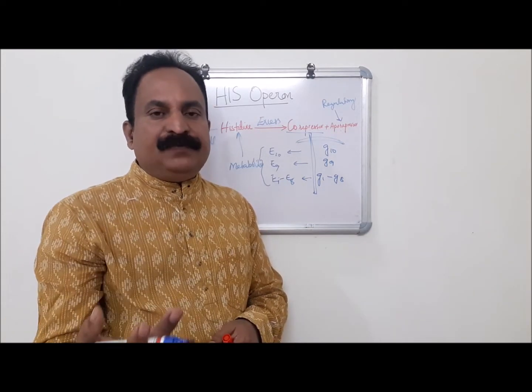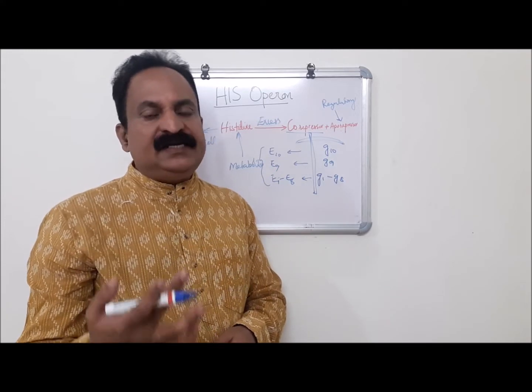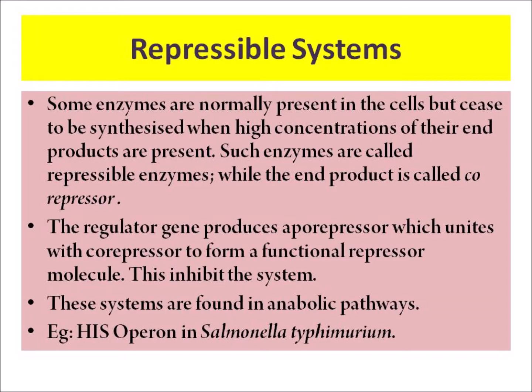In repressible systems, some enzymes are normally present in the cells but cease to be synthesized when high concentrations of their end products are present. Such enzymes are called repressible enzymes, while the end product is called the corepressor. The regulator gene produces an aporepressor, which unites with the corepressor to form a functional repressor molecule. These systems are found in anabolic pathways.